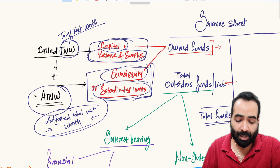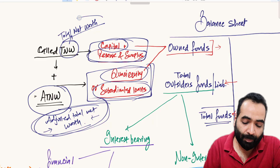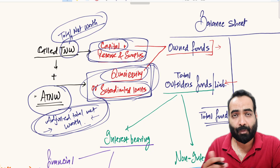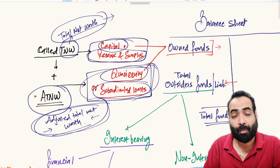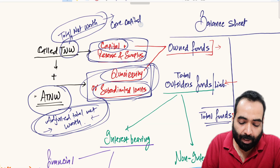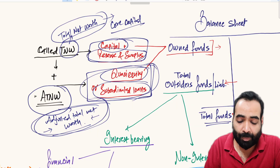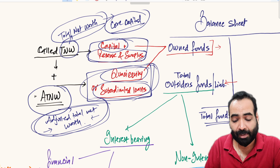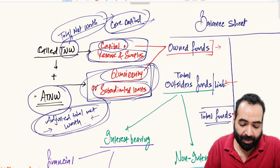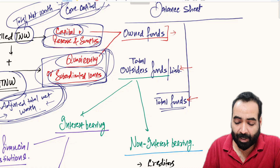We will calculate our ratios on the basis of ATNW. However, you can also calculate ratios on the basis of TNW — core capital, meaning capital plus reserves and surplus only — if you want to ignore quasi equity and see the ratio on core capital. You can see the gearing and leverage ratio on either basis, but principally banks accept the adjusted TNW concept.